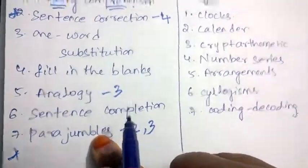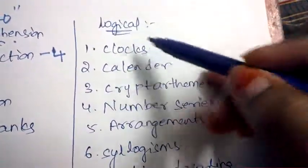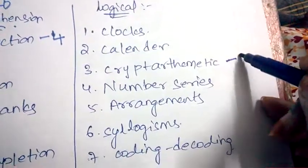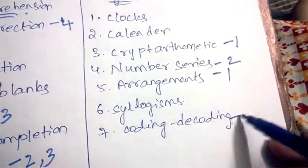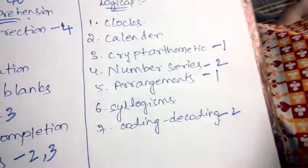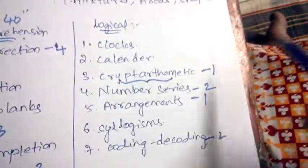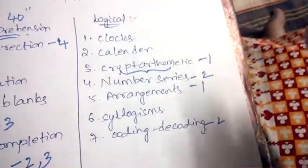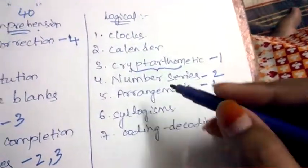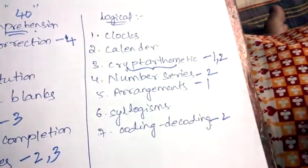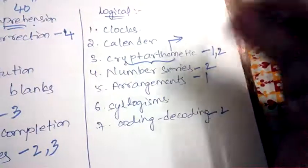Now let's see the logical syllabus. Coming to logical, you'll be asked on clocks, calendars, cryptarithmetic - one question will be asked. Number series - two questions will be asked. Arrangement, syllogism, coding and decoding. Coding or decoding sometimes it may come or sometimes it may not come, but cryptarithmetic is very, very, very important and one question hundred percent appears in your exam pattern for Infosys. If you are so lucky they'll be asking you only one question, otherwise they may ask two questions. Cryptarithmetic takes a lot of time, one question will take so much time to be solved.